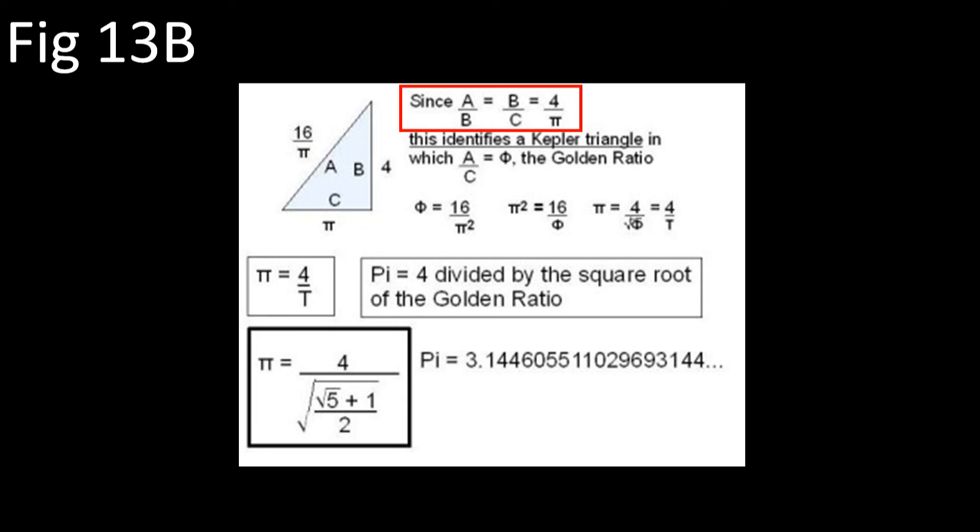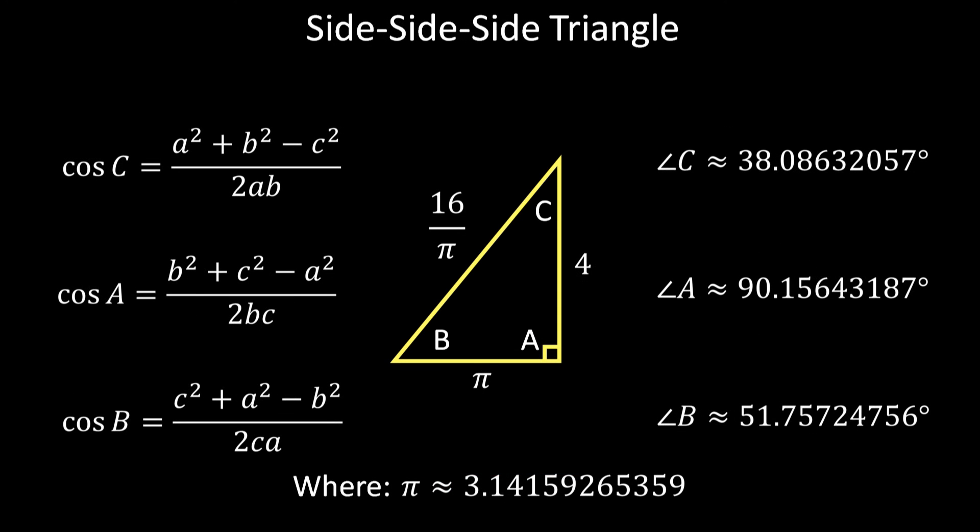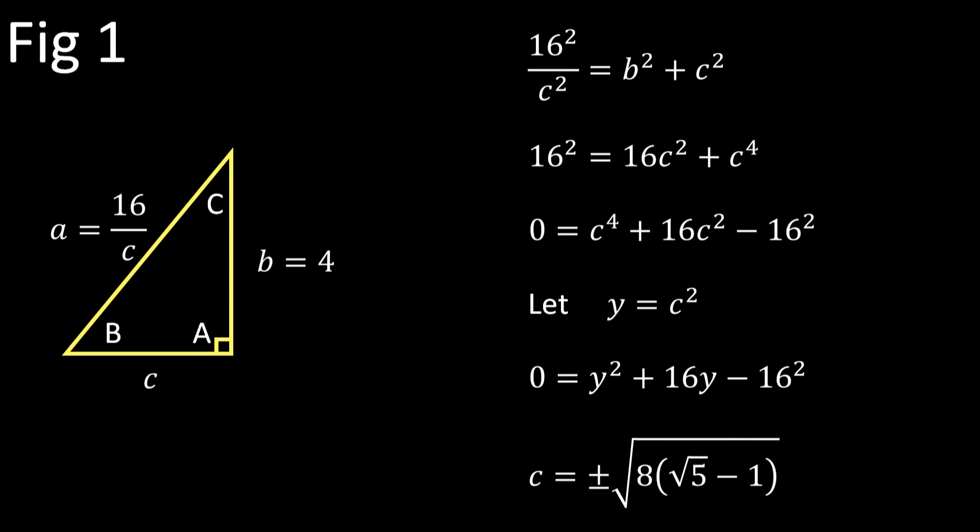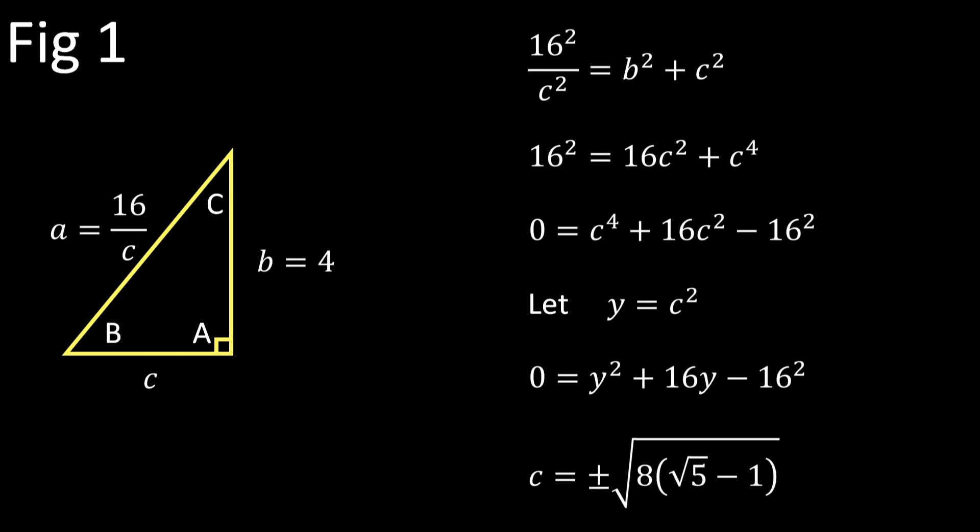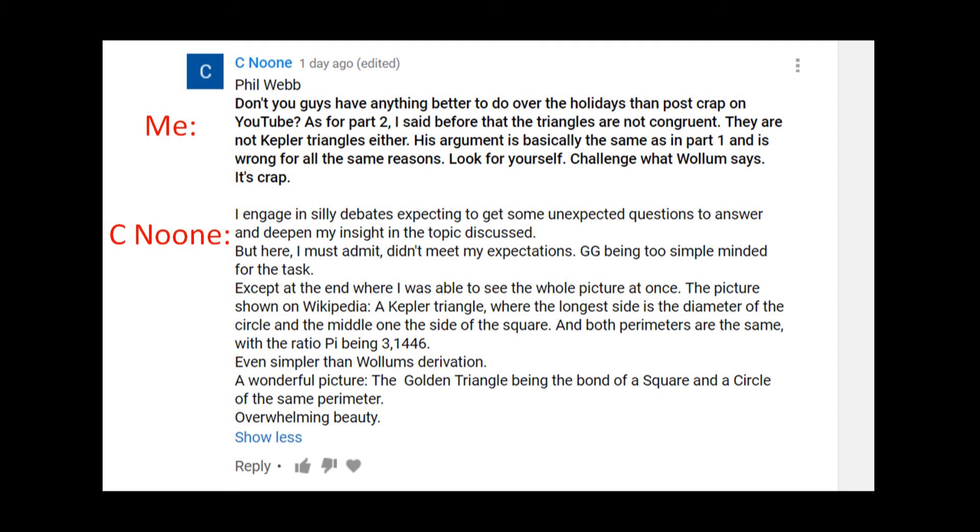Bet you didn't see that coming. Of course, equal ratios like Wolham's special property don't necessarily mean you have a Kepler triangle. In fact, it doesn't even mean you have a right triangle at all. And simply finding a solution to a quartic equation—which, déjà vu, we solved in Part One—doesn't mean the solution is some profound revelation of an ancient conspiracy to hide the true value of π from the general public.